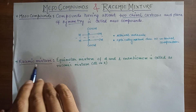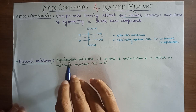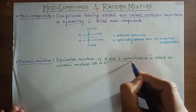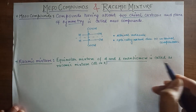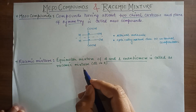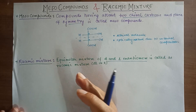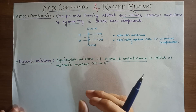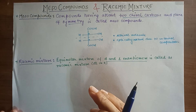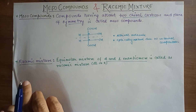Now we will discuss about racemic mixture. What is a racemic mixture? An equimolar mixture of D and L enantiomers is called a racemic mixture — a mixture which has both D and L enantiomers in exactly equal proportions is known as a racemic mixture.